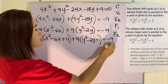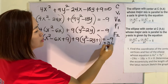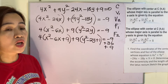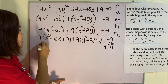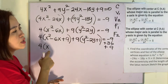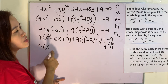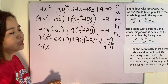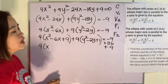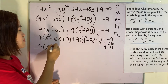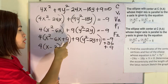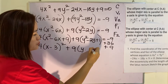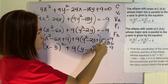We add 36 on one side and 9 on the other. Remember to add the same amount on both sides so that the equation will not change its value. Our aim in doing this is to transform the equation into standard form so that we can identify h, k, a, and b, and of course determine the major axis. So we have 4 times (x minus 3) squared plus 9 times (y minus 1) squared, and the right side is 36.